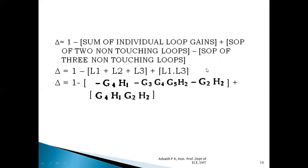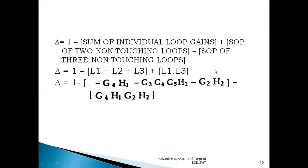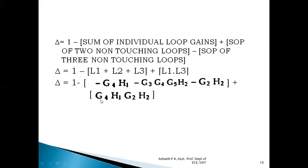Since there are only three loops and the only non-touching pair is L1 and L3, there are no three non-touching loops. Hence delta = 1 − (L1 + L2 + L3) + (L1·L3). Substituting: delta = 1 − (−G4·H1) − (−G3·G4·G5·H2) − (−G2·H2) + (−G4·H1)·(−G2·H2) = 1 + G4·H1 + G3·G4·G5·H2 + G2·H2 + G2·G4·H1·H2.